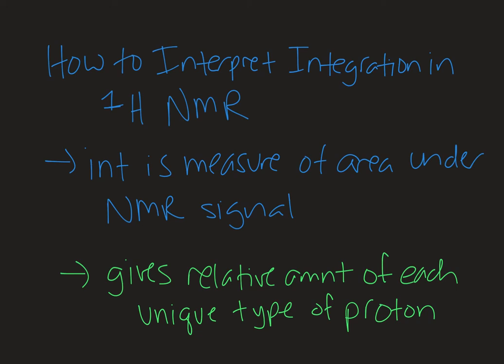Welcome to Chemistry with Caroline. In this video, we are going to look at how to interpret integration in the proton NMR. Integration is one of the pieces of information that a proton NMR gives us, and it's literally just a measure of the area under the peak. So it tells us the relative amount of each unique type of proton.